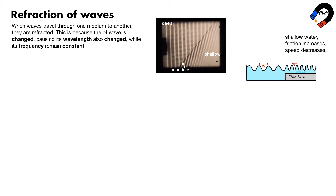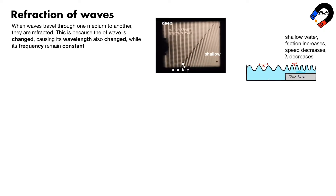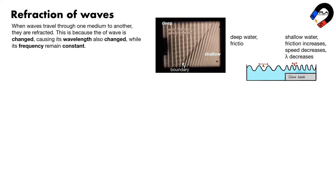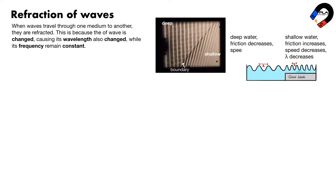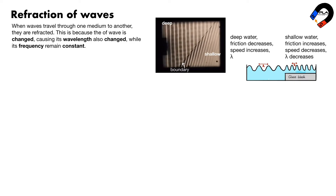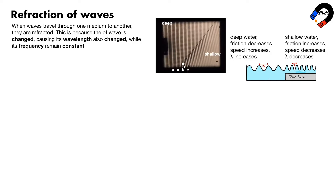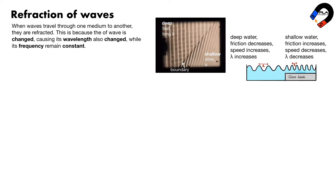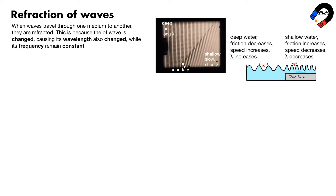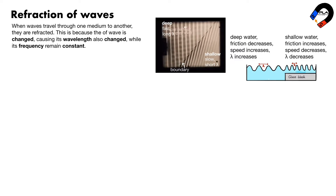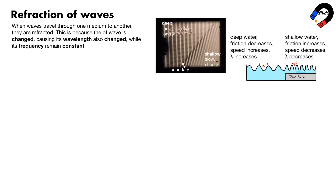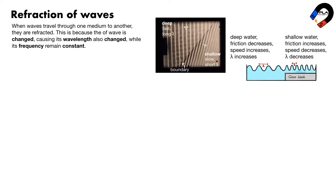Water travels faster in deep water due to decreased friction, so its wavelength increases while frequency remains constant. When incident wave fronts travel from deep water to shallow water, the wave speed decreases, causing the wave fronts to bend toward the normal line and come closer together. This causes the wavelength to decrease.